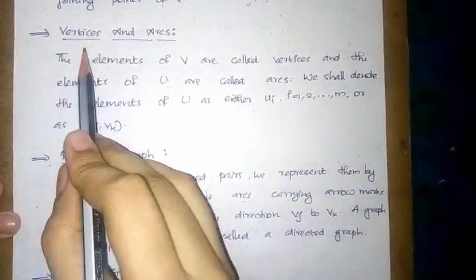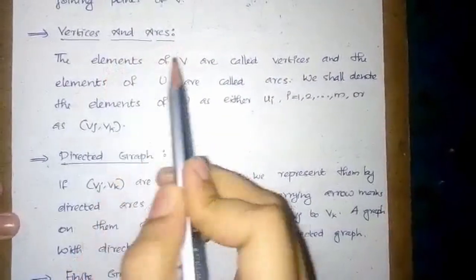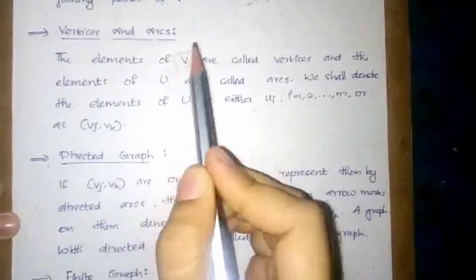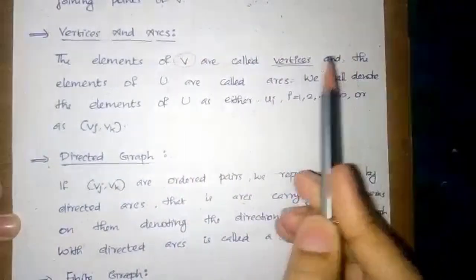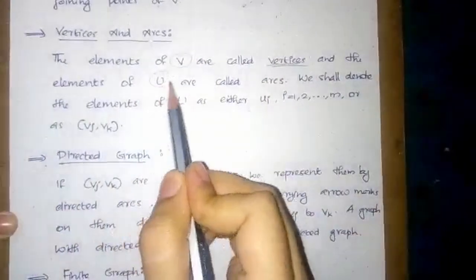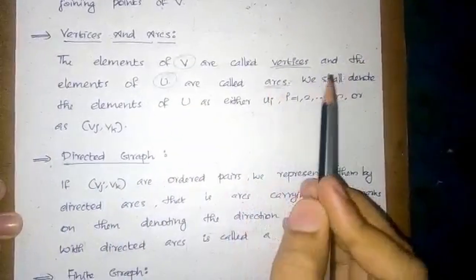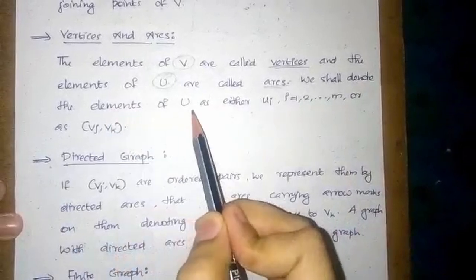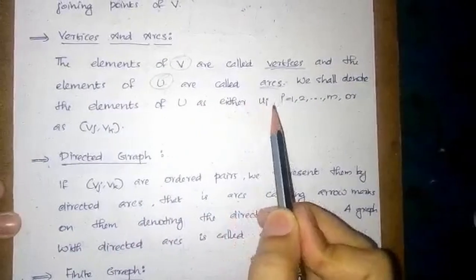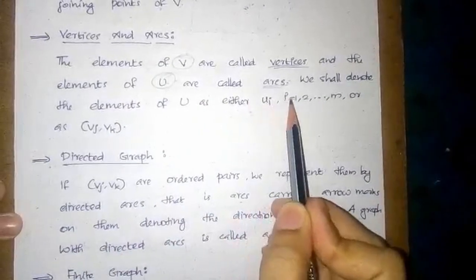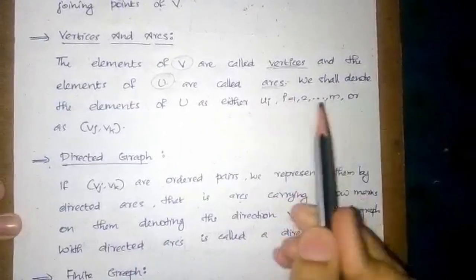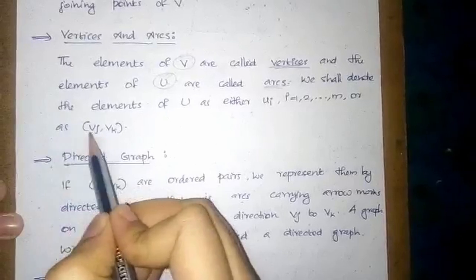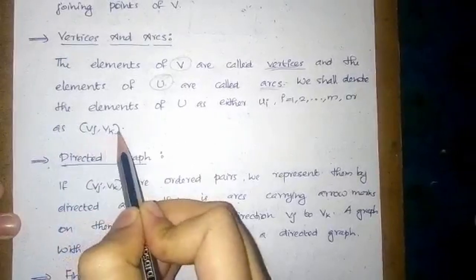Vertices and arcs. The elements of V are called vertices and the elements of U are called arcs. We shall denote the elements of U as either Ui where i = 1, 2, ..., m, or as ordered pair (Vj, Vk).